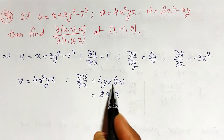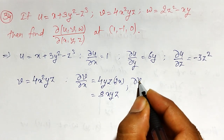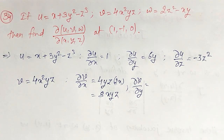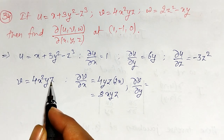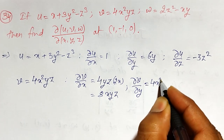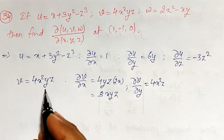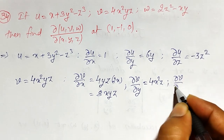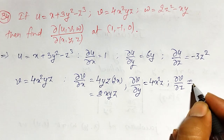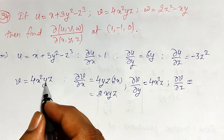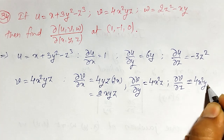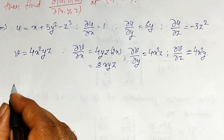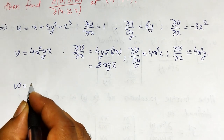For ∂v/∂y: 4x squared z is constant and the partial derivative of y is 1, so ∂v/∂y = 4x squared z. For ∂v/∂z: 4x squared y is constant and the derivative of z is 1, so ∂v/∂z = 4x squared y.